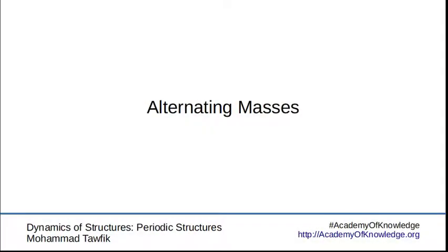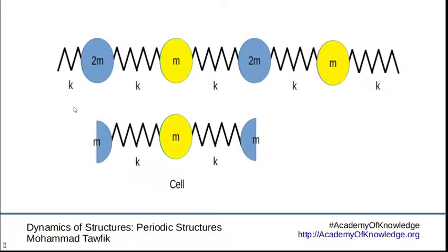But now we are going to investigate another system that's still a discrete system, but with alternating masses. In this case, we have the masses changing. One is 2m, and one after it is m, 2m, m, 2m, m, and so on.